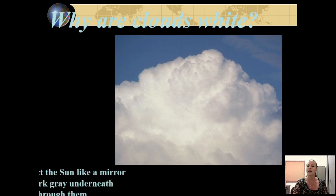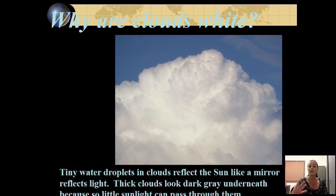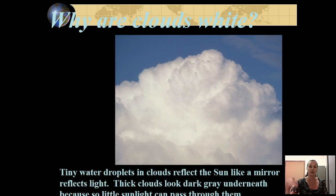Why are clouds white? Did you ever wonder? Well, they're basically tiny droplets of water that are reflecting sunlight, like a mirror reflects light. The thick clouds are dark gray underneath because not as much sunlight can pass through them.